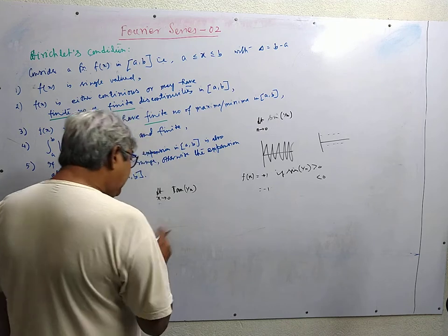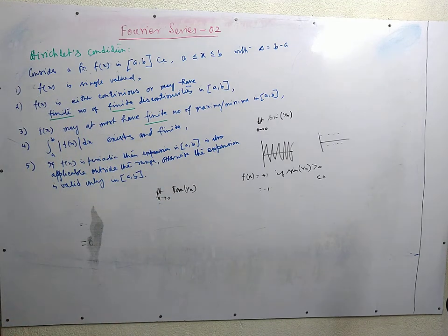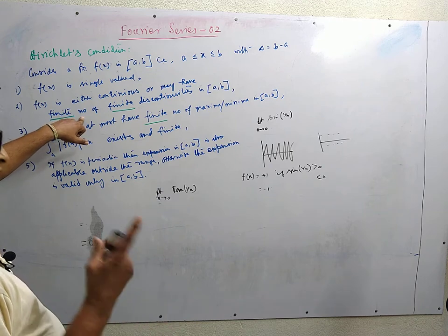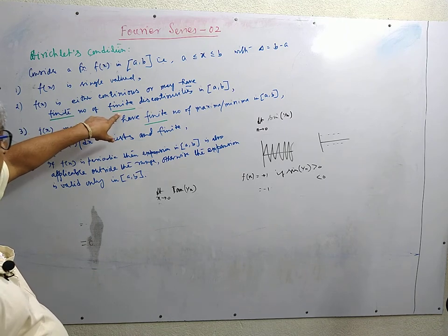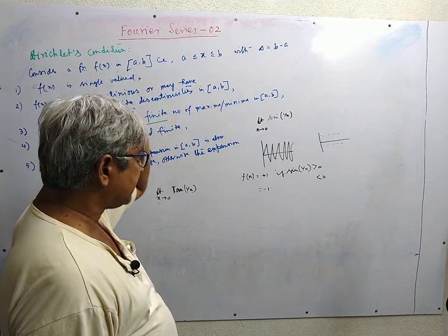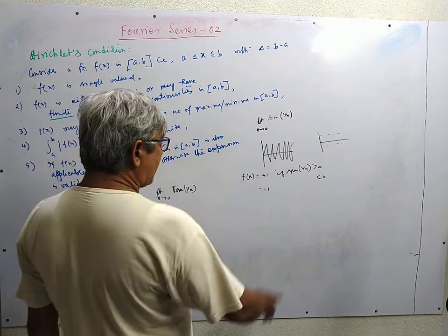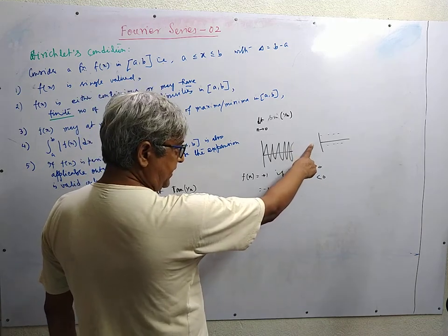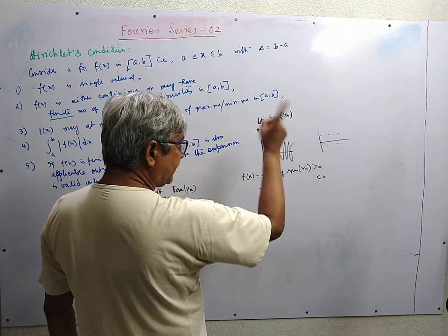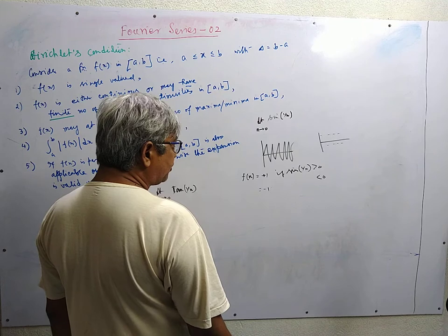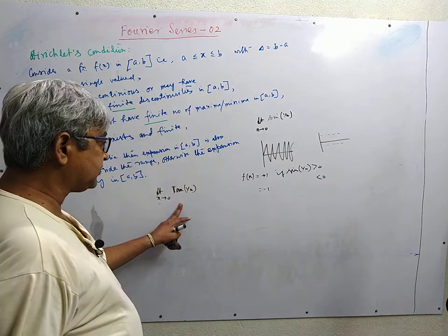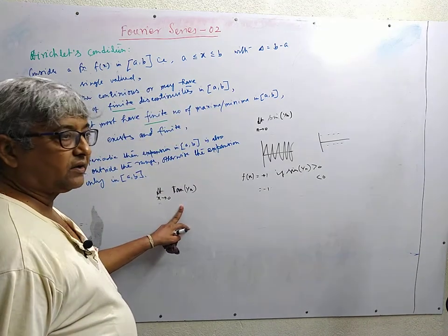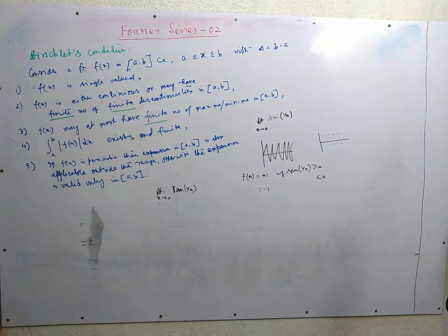The function tan(tan(1/x)) will have infinite number of infinite discontinuities. Fourier theory says that if you want to expand a function in Fourier series, the number of discontinuities must be finite. At the same time the amount of discontinuity must be finite. The tan function around pi/2 has a single discontinuity but the amount is infinite. The previous example had infinite number of infinite discontinuities.